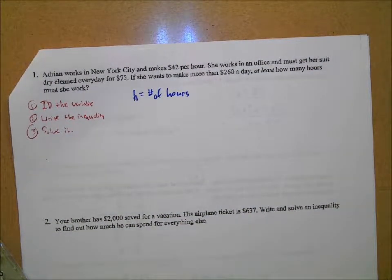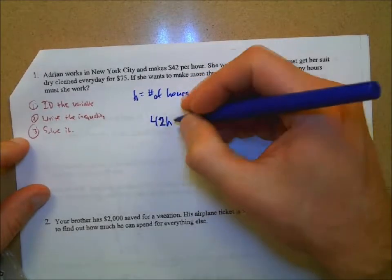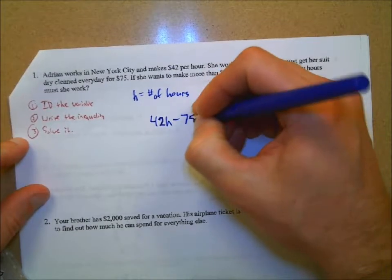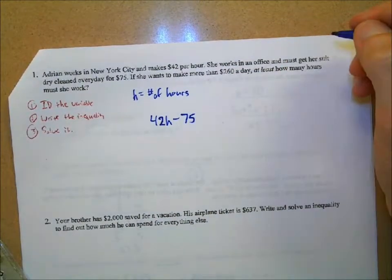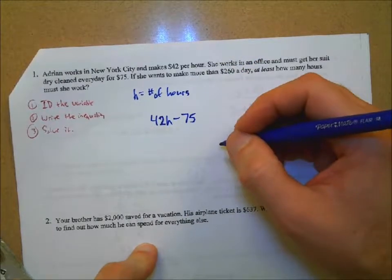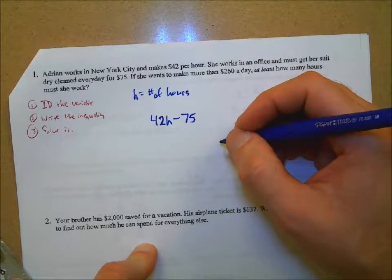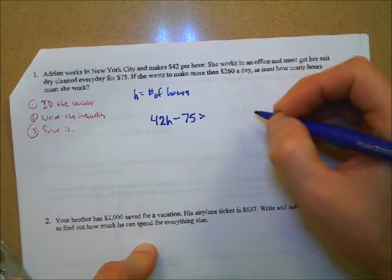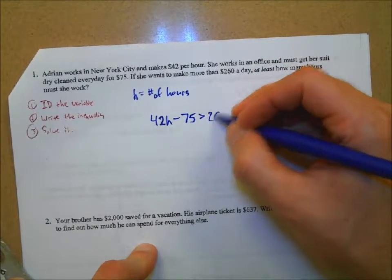I said h equals hours. Ah, perfect. Yes, h equals number of hours here. Okay, great. Do you want to give us the inequality too? Did you come up with that? Okay, what did you get? I got 42h minus 75 equals 260.